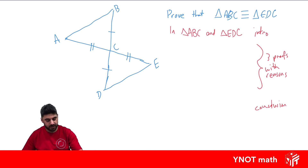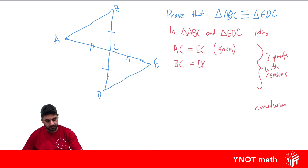Now we need three proofs, so we identify three sides or angles that are equal. First, side AC equals side EC — this was given to us. Second, side BC equals side DC — that was also given to us. So we've already got two; we just need one more.